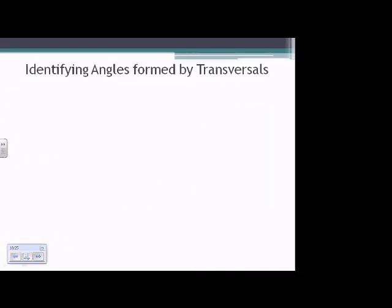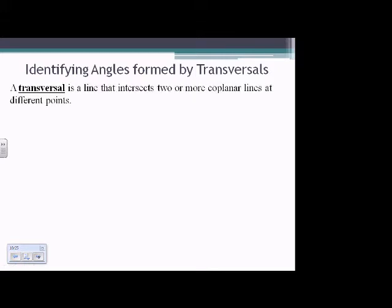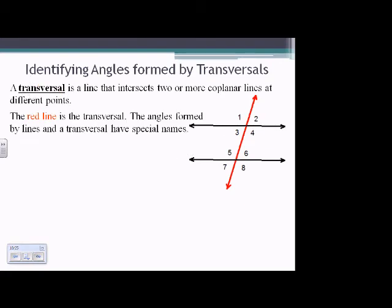Identifying angles formed by transversals. A transversal is a line that intersects two or more coplanar lines at different points. The red line in the picture is the transversal. The angles formed by lines and a transversal have special names. We can assume these lines are all coplanar and the red line intersects them.